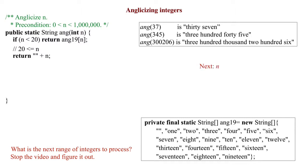The next range of integers to process is 20 through 99. Anything larger requires the word hundred. We have to split the value n in the range 20 through 99 into two pieces. For example, for n equal to 23, we need to extract the 2 and the 3 and replace them by the words twenty and three.